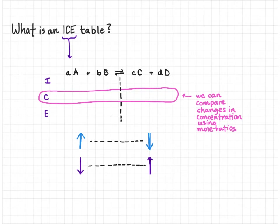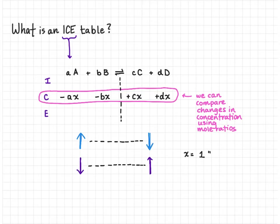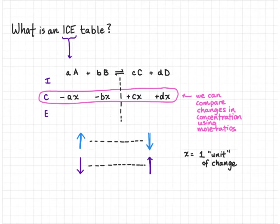We're always going to have opposite signs on either side of the arrow for reactants and products. The magnitude of the change can be represented with mole ratios. If our reactants lose concentration, the change in concentration will be represented by x — one unit of chemical change — multiplied by the coefficient in front of the chemical species. So A will experience a change of a·x, B will be b·x, C will be c·x, and D will be d·x.